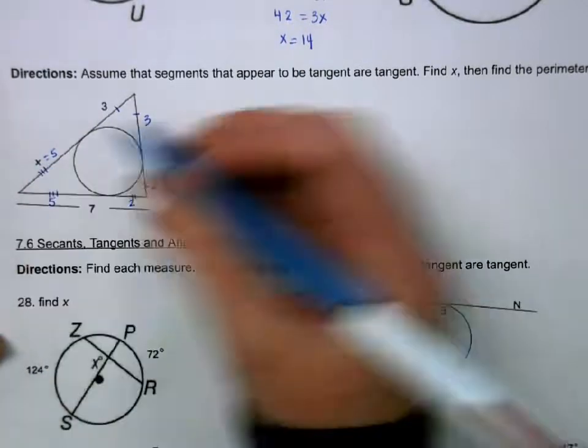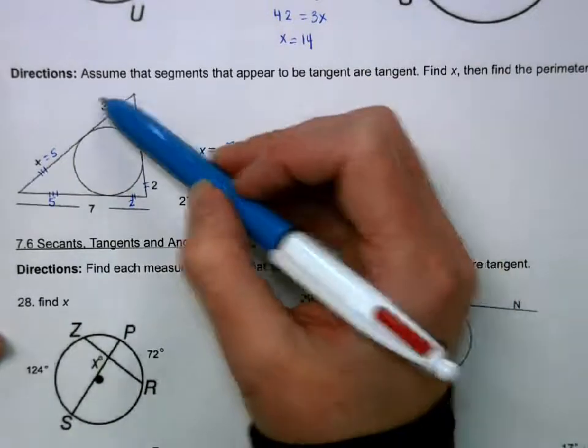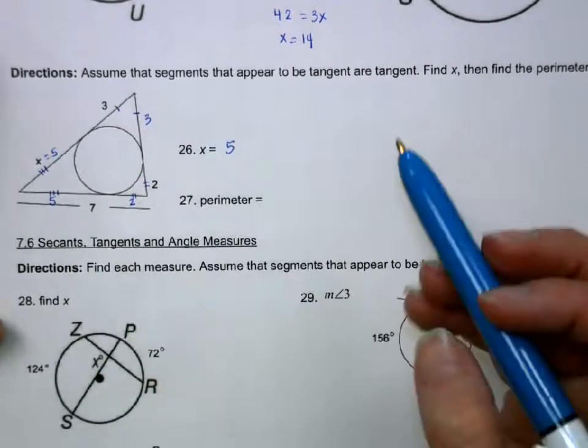The perimeter, I'm going to add 3 plus 3 plus 2 plus 2 plus 5 plus 5, gives me a perimeter of 20.